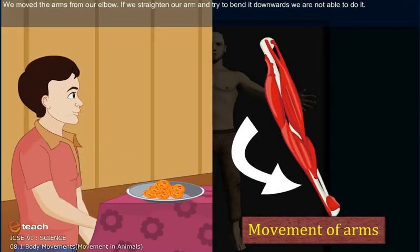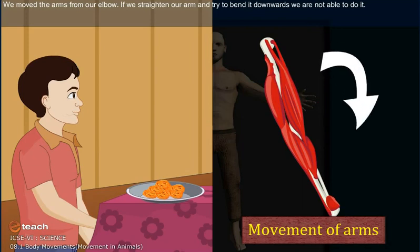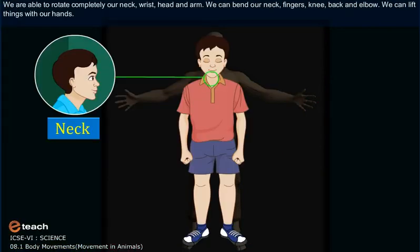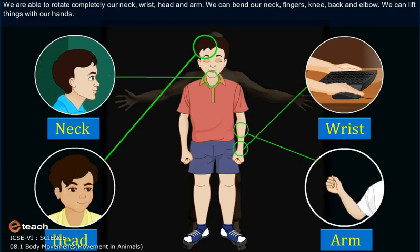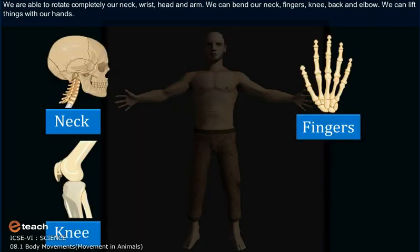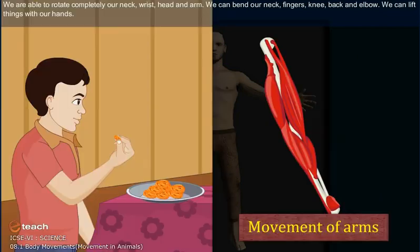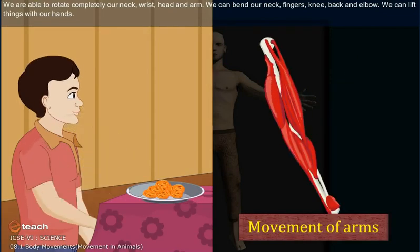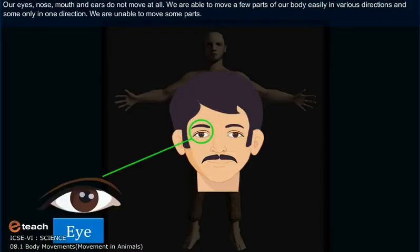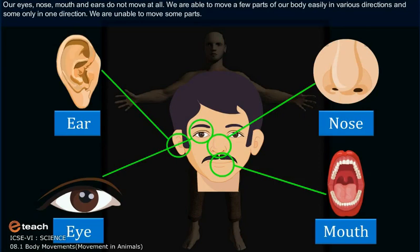We move the arms from our elbow. If we straighten our arm and try to bend it downwards, we are not able to do it. We are able to rotate completely our neck, wrist, head, and arm. We can bend our neck, fingers, knee, back, and elbow. We can lift things with our hands. Our eyes, nose, mouth, and ears do not move at all. We are able to move a few parts of our body easily in various directions and some only in one direction, while we are unable to move some parts.